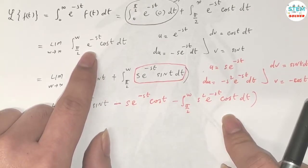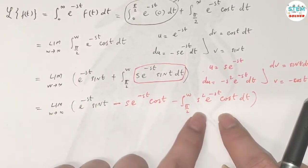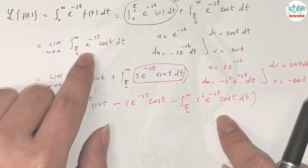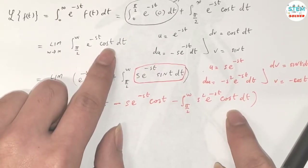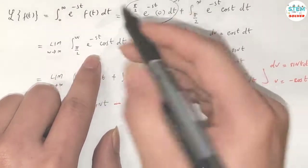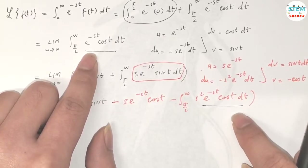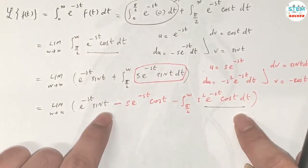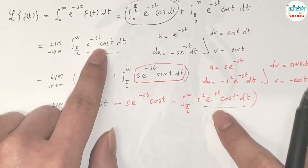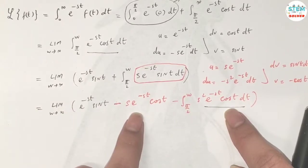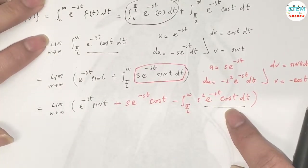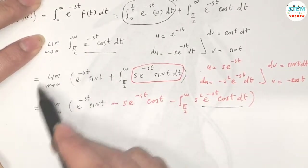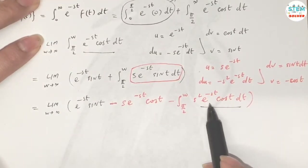We started with the integral of e^(-st) cos(t) dt, and after two rounds of integration by parts, we ended up with that same integral appearing on the right side. So we can combine these — move the integral on the right to the left side and factor out the common factor.